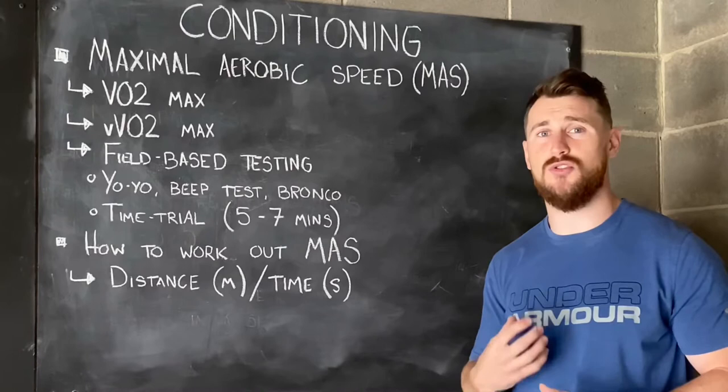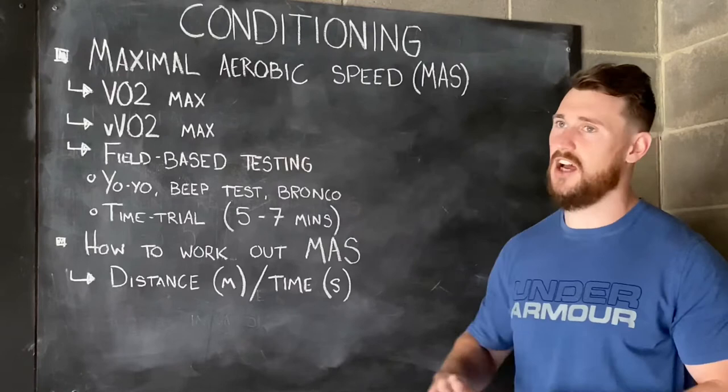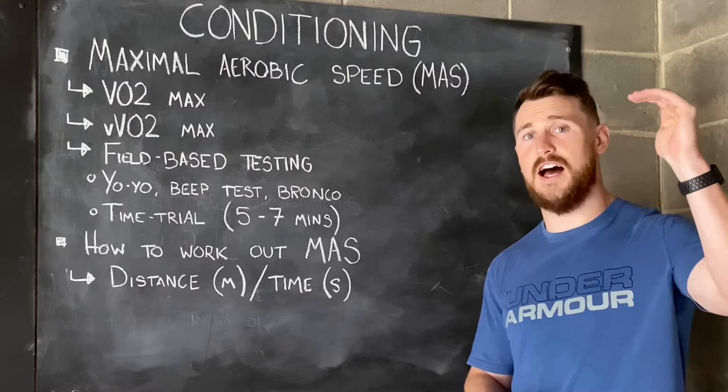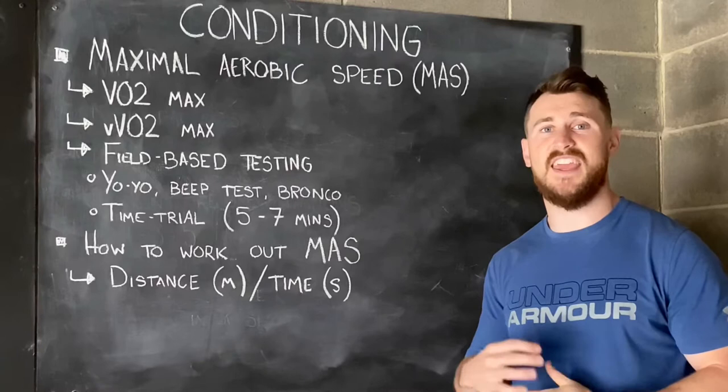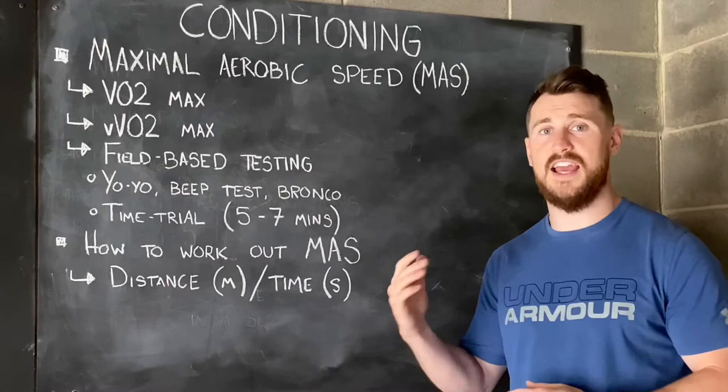This measure is basically the tipping point at which you cannot go any harder — you are using up as much oxygen as your body can possibly take out of the red blood cells from the haemoglobin during exercise. You can't work any harder than this from aerobic exercise.